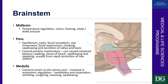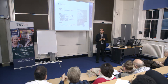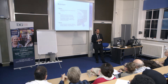Beneath that is the pons, which is involved in equilibrium and taste. There's also something called the medial longitudinal fasciculus, which keeps your eyes fixated. If you have a lesion there, you're not able to fixate your eyes clearly on one point — and that's called nystagmus, where the eyes appear jerky.